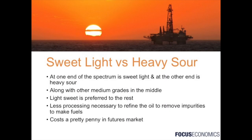Now we can put it all together and talk about the difference between sweet light crude oil and heavy sour crude oil. At one end of the spectrum we have sweet light crude oil — the holy grail so to speak — and at the other end we have heavy sour crude oil, with medium grades in between. Sweet light crude oil has a lower liquid density to water and lower sulfur content, while heavy sour crude oil has higher density and higher sulfur content. The light and sweet variety is preferred because of the reduced processing needed to remove impurities for refinement into fuels such as gasoline, diesel, and other finished petroleum products. However, being of higher quality, it will cost a premium in the futures market.